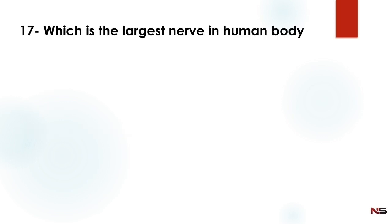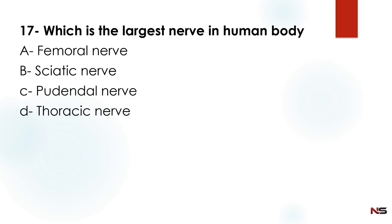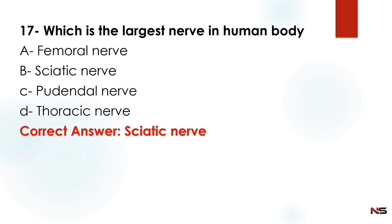Next question: Which is the largest nerve in the human body? Option A: femoral nerve. Option B: sciatic nerve. Option C: pudendal nerve. Option D: thoracic nerve. The correct answer is sciatic nerve. The sciatic nerve is the largest nerve in the human body.